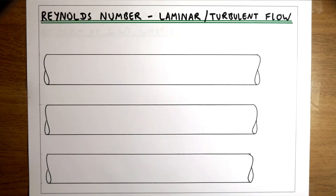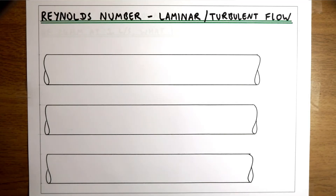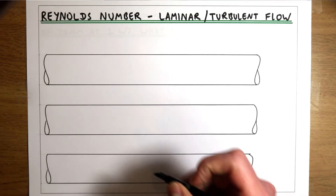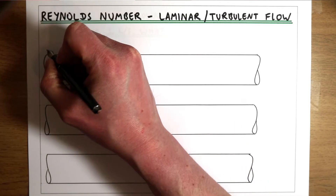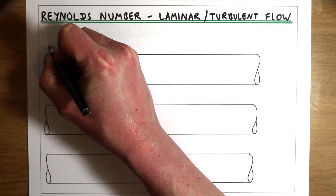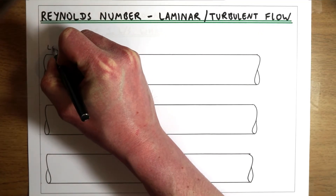In this video we're looking at Reynolds number and the difference between laminar and turbulent flow. When water or any fluid is flowing very slowly through a pipe, we often get something called laminar flow.